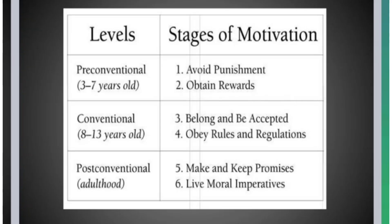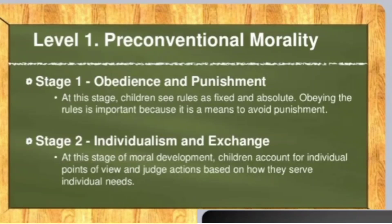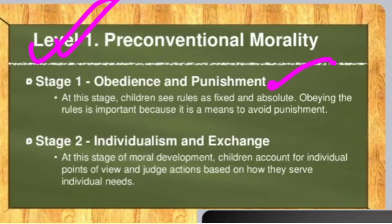In the pre-conventional level, Stage 1 is the punishment-obedience orientation: whatever leads to punishment is wrong. Stage 2 is the rewards orientation: the right way to behave is the way that is rewarded.